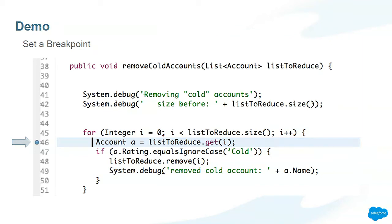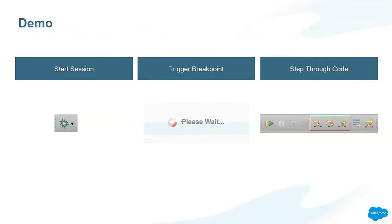Let's take a look at this method. I want to call your attention to line 45, which is iterating through the list; line 47, which is looking for cold accounts; and line 48, which removes a cold account from the list and then continues to iterate forward. From here, we're going to initiate our debugging session. After we set the breakpoint, we go to our interactive debugger in our Force.com IDE, start a session, go back to our Visualforce page, and click that checkbox. Clicking that checkbox will execute that method and the execution will stop at the breakpoint. Once we get there, we can step through the code and see how the call stack changes.